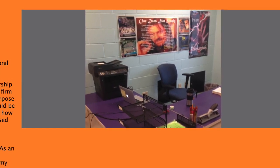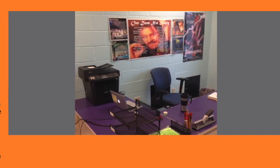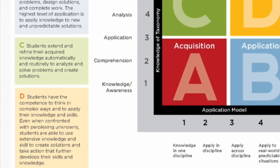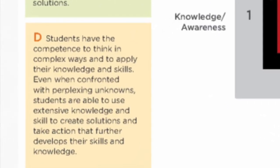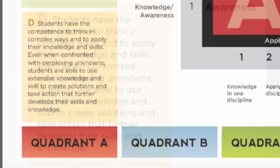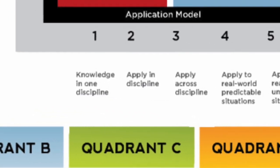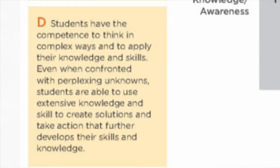First and foremost, I would like to establish the purpose of projects and this particular project's options pertinent to the rigor and relevance framework. Specifically, we will be focusing on Quadrant D and Level 5 of the application model, which, when considered in tandem, posit that students should be able to apply content-related skills to real-world contexts, and real-world contexts could be interpreted to mean career-related contexts. The language used in Quadrant D also indicates that students should be able to apply knowledge to solve unknown problems, which is so general that it can mean anything.